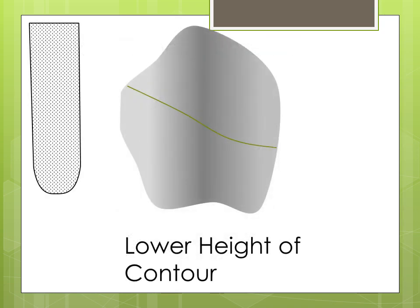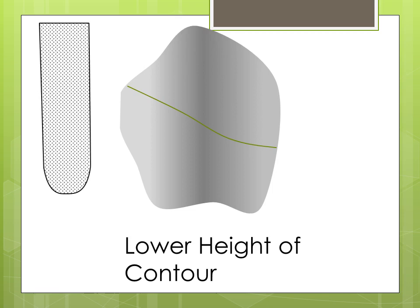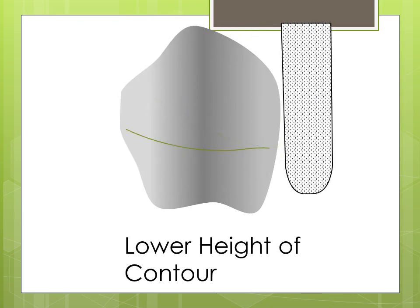Dr. Goon, it seems as though we'll be using suprabulge clasps, owing to the fact that the patient has frenal attachments which could interfere with placement of a bar clasp. We've marked the height of contour of the abutment. These clasps are simple to use and usually won't give you any trouble if used correctly. However, the origin and rigid portion of the cast circumferential clasp should engage the tooth in the middle one-third. This is impossible if the height of contour is in the occlusal one-third, as it frequently is. Therefore, minor enameloplasty, with all due consideration to tooth preservation and aesthetics, should lower the height of contour to the middle one-third for the bracing portion of the clasp.